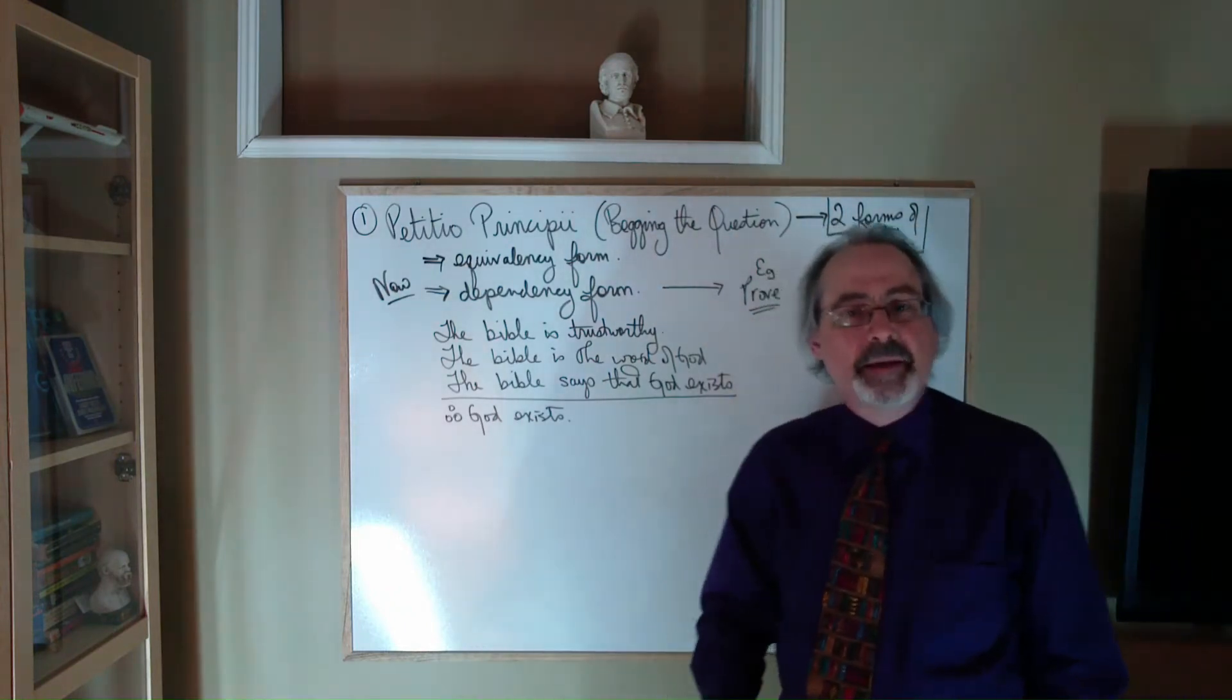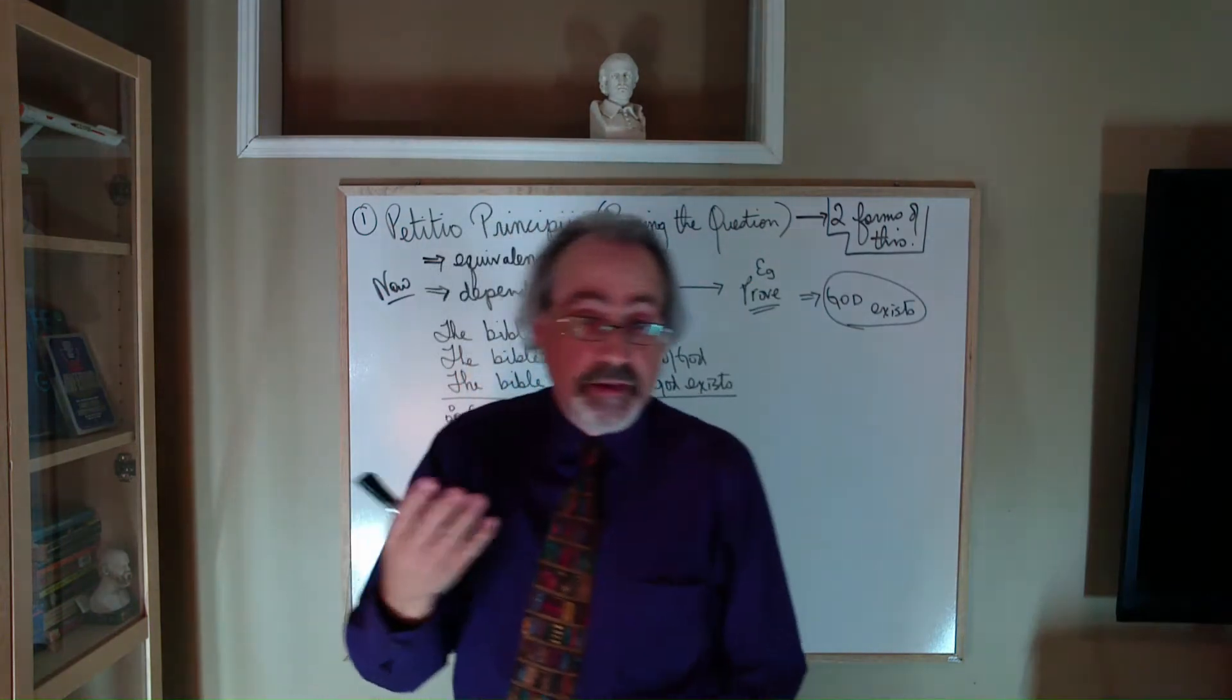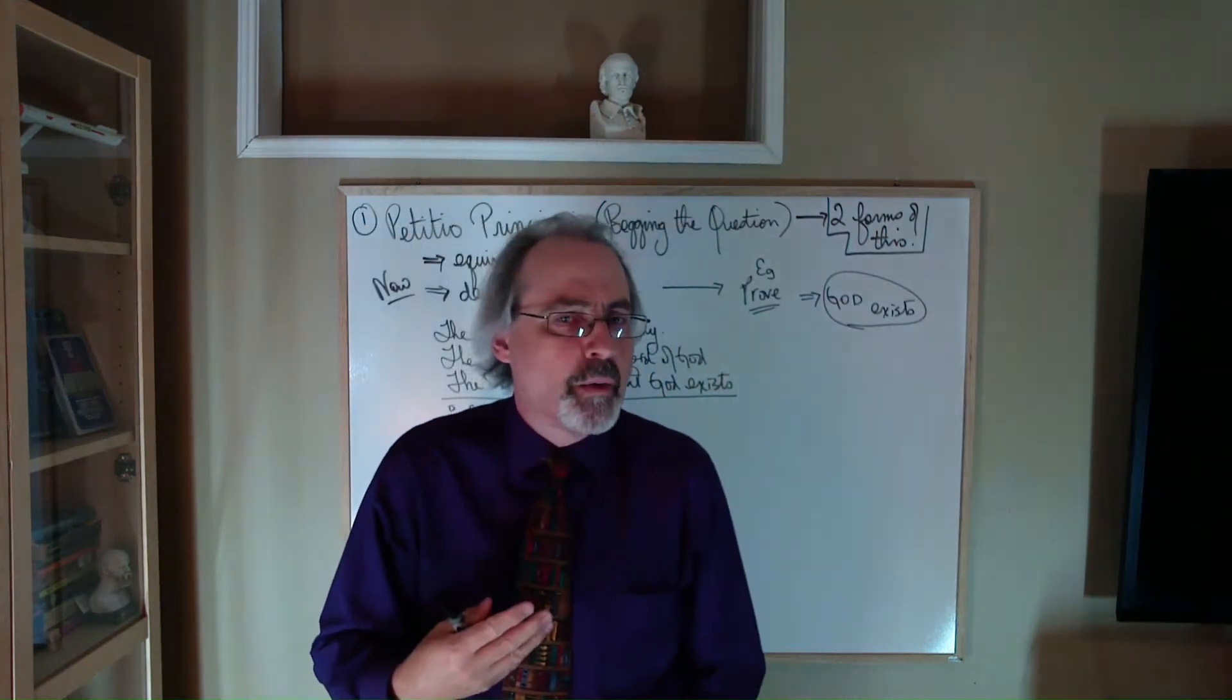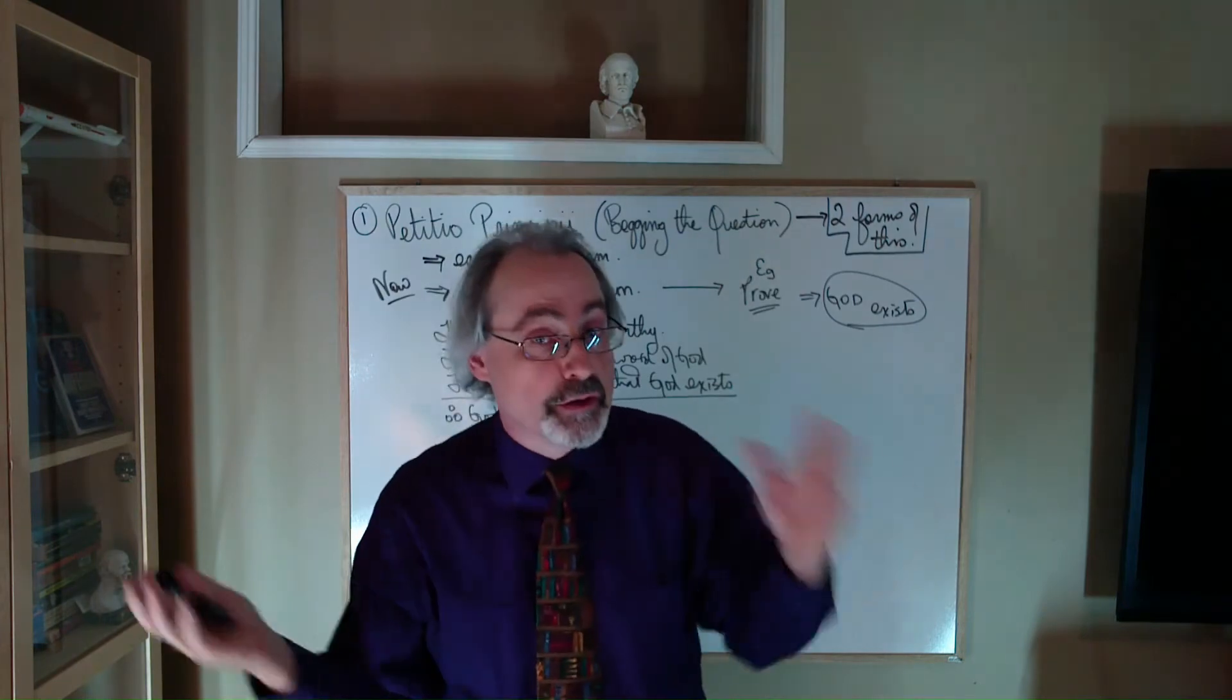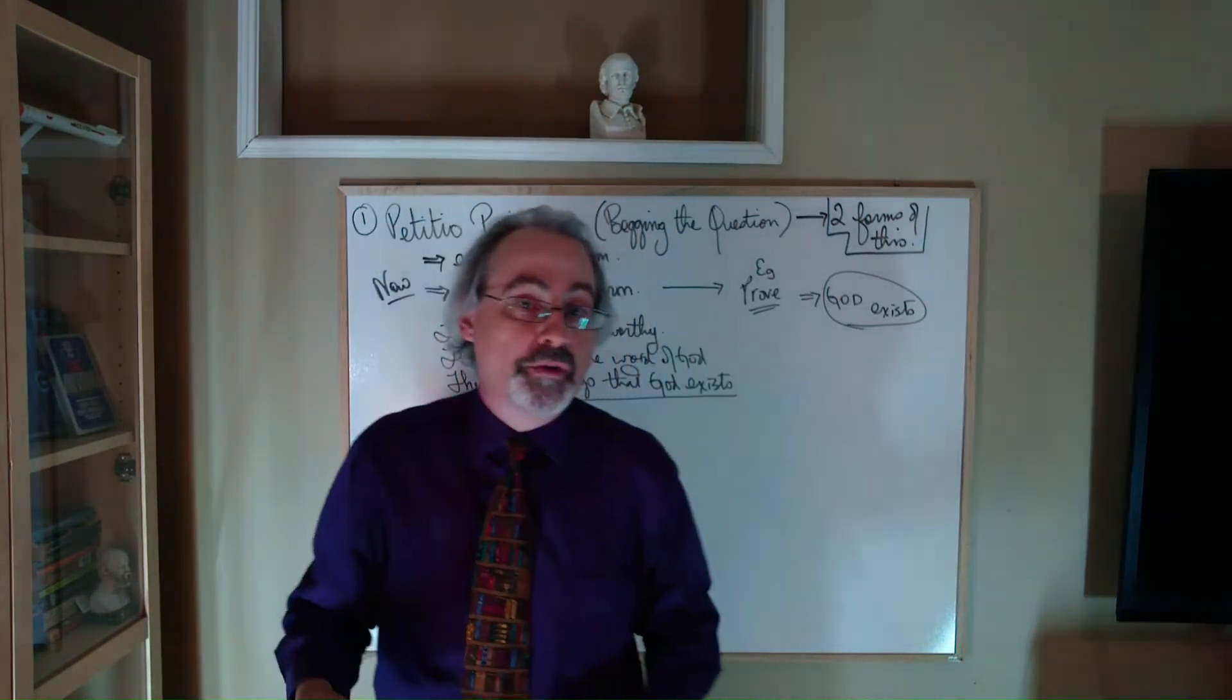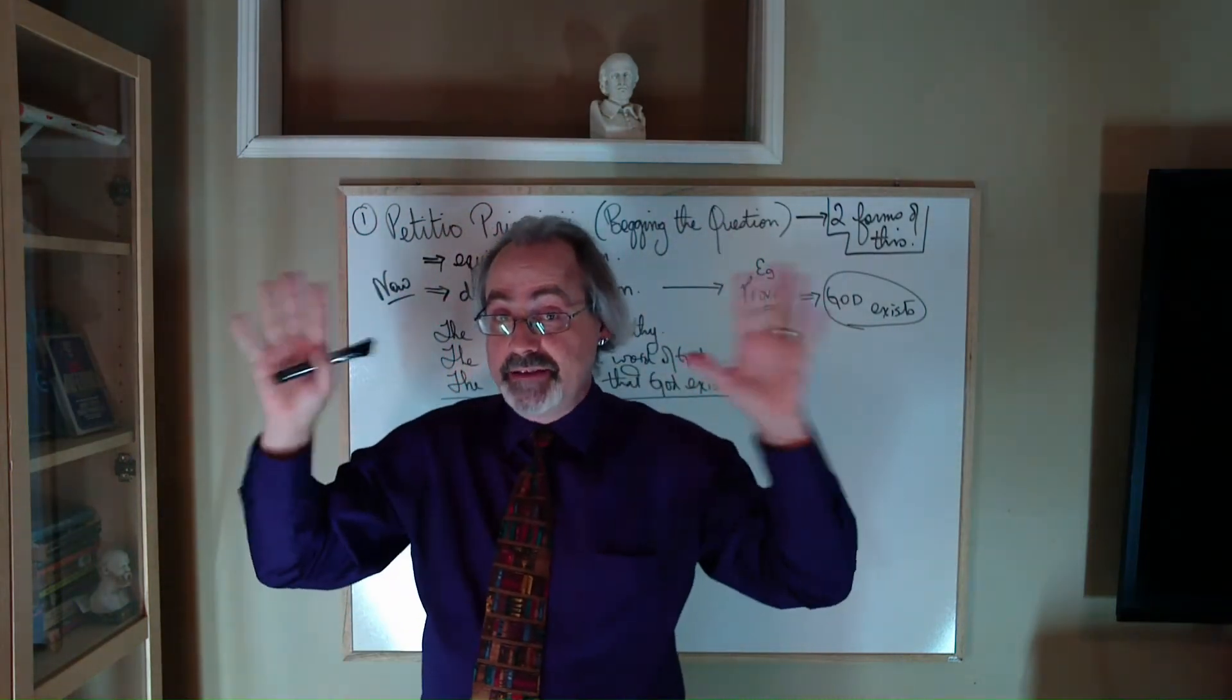The key idea in the dependency form of circular reasoning is that what you're trying to prove, that is, remember, what you're trying to prove is the conclusion, right? So the conclusion comes at the end. It's at the bottom. The end of the structure, we call the argument: premises, conclusion. That's the whole thing. That's the argument.